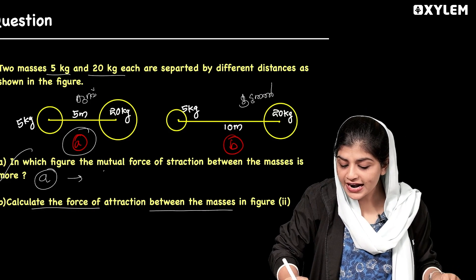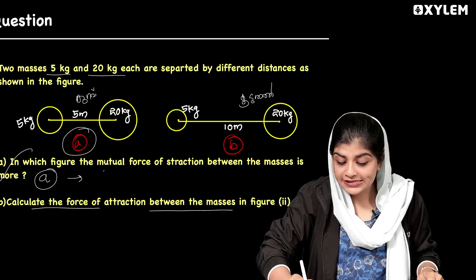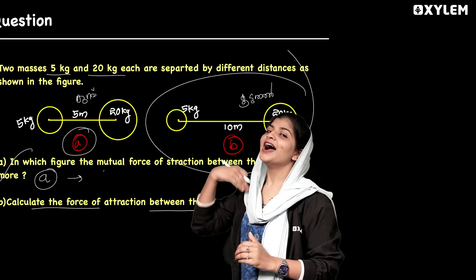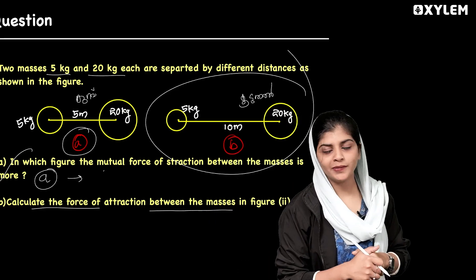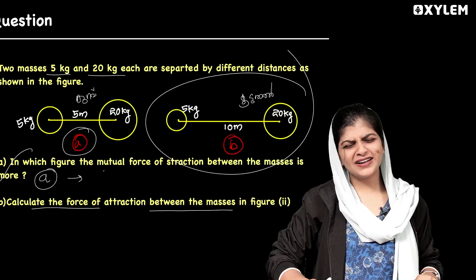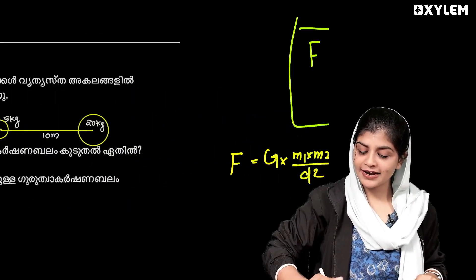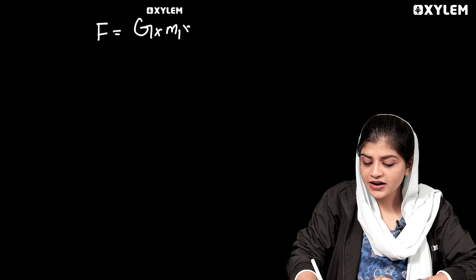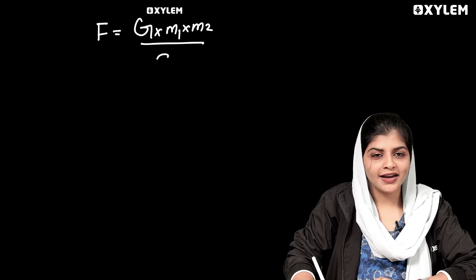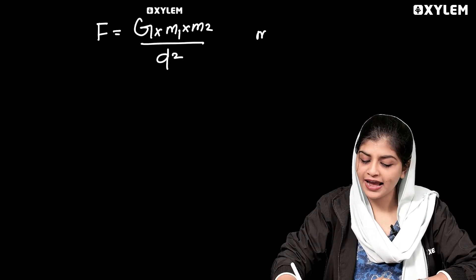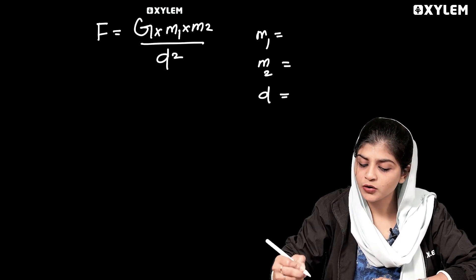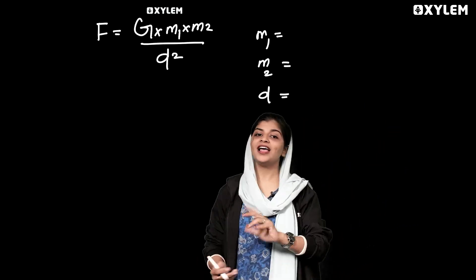Next question: calculate the force of attraction between the masses in figure 2. So what is the force of attraction? It is very simple. We have the equation — F is equal to G into M1 into M2 divided by D square. If you know M1, you will be able to answer the question.